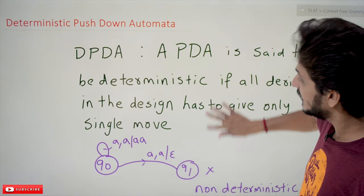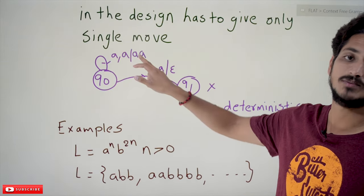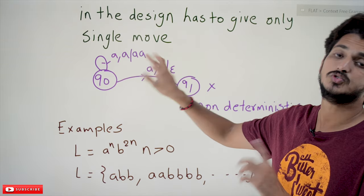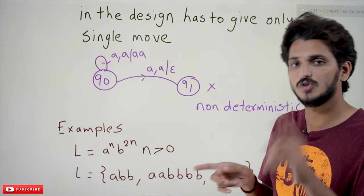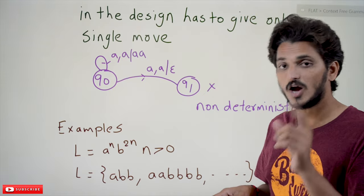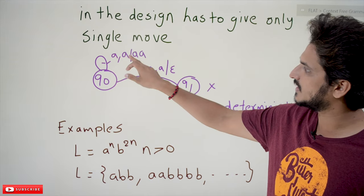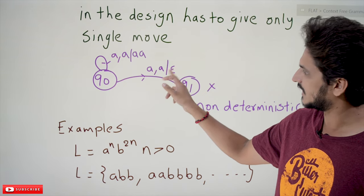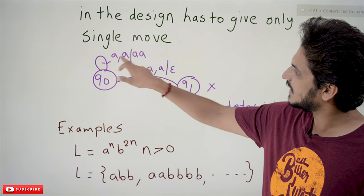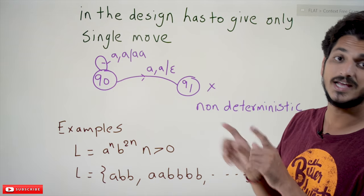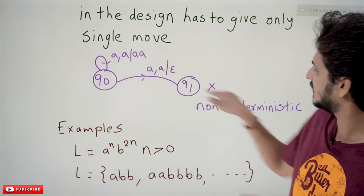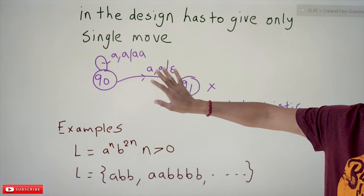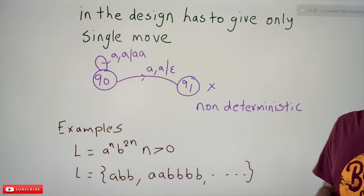The same logic applies here for pushdown automata. You have to take a single move for each input and stack symbol combination. For any input and stack symbol combination, you should not move to two different states — you must take only a single move. For example, if for input 'a' and stack symbol 'a' you are moving to both q0 and q1, you are taking two moves. This is not deterministic pushdown automata — it is non-deterministic pushdown automata.